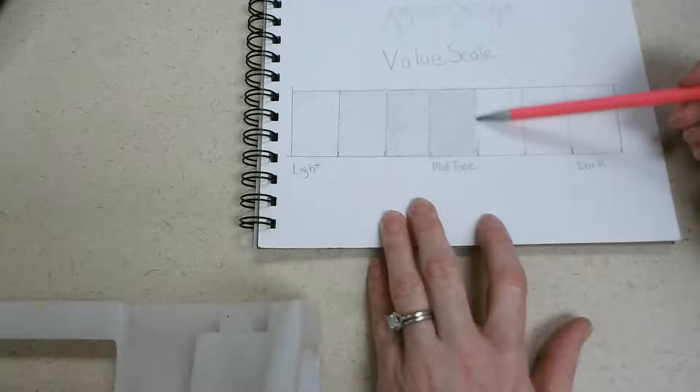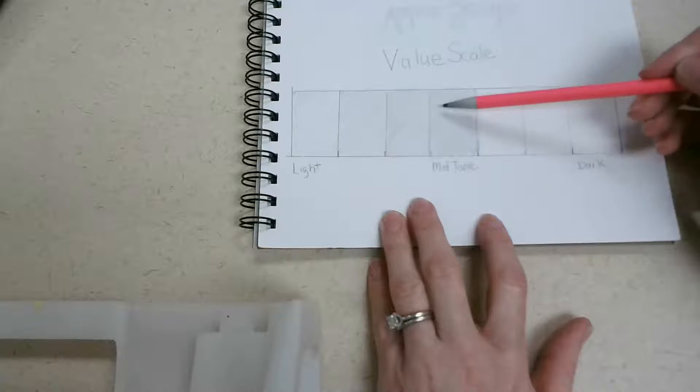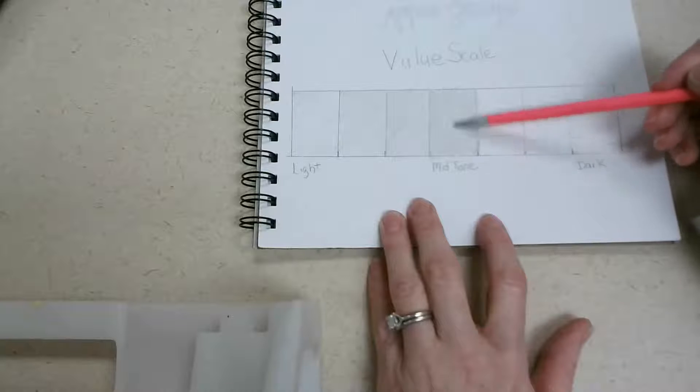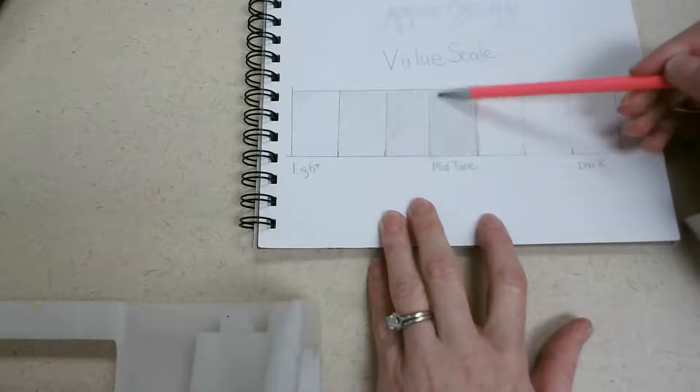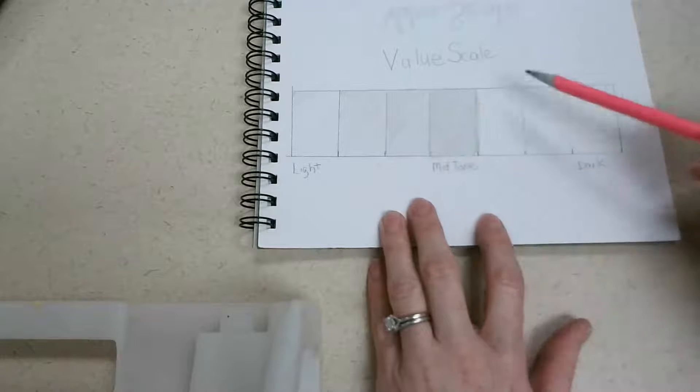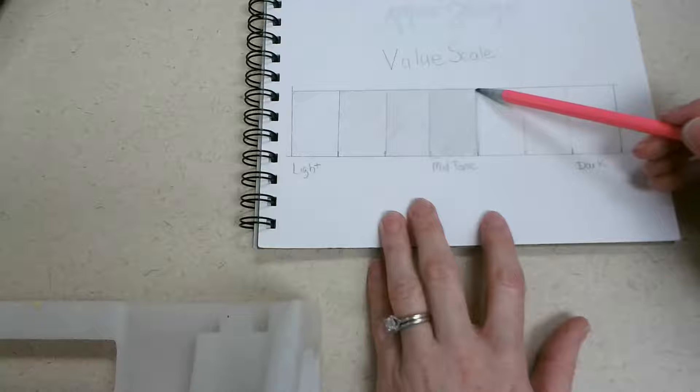Now sometimes it's nice to go in a different direction. So as you're moving across your page making your darker values, if you go in two directions, you're going to help eliminate a lot of those lines that you see when you're drawing. So I like to start out in one direction and then swap to a new direction.